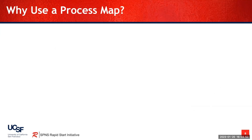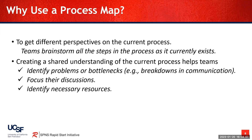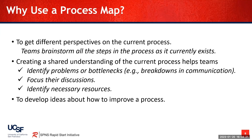So why do teams use process maps? Process maps are really good at helping to get different perspectives. Teams can brainstorm all the steps in a process as it currently exists to get a shared understanding of what's happening inside the organization or the agency. This shared understanding of the current process helps teams to identify problems or bottlenecks, such as breakdowns in communication. It can help to focus discussions, and it can also help to identify resources. Lastly, a process map can be a really great tool to help teams develop ideas about how to improve their process.